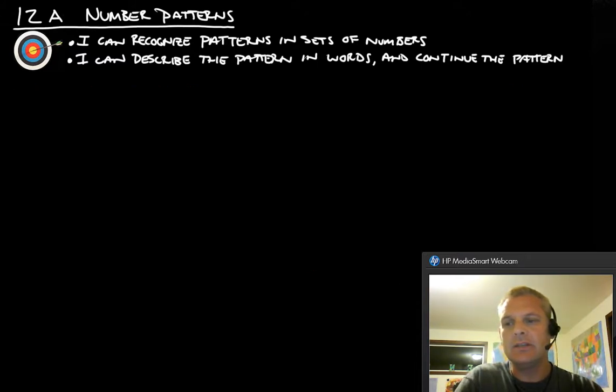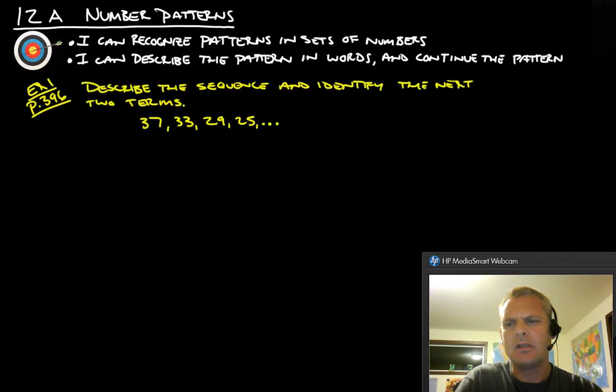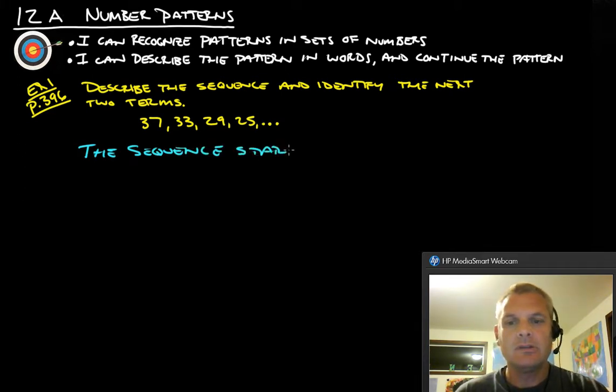Let's take a look at some examples here. First one is example one from page 396 and it says to describe the sequence and identify the next two terms. We've got 37, 33, 29, and 25. Basically what you want to do is we want to talk about where the sequence starts. The sequence starts at 37, so we just write that down.